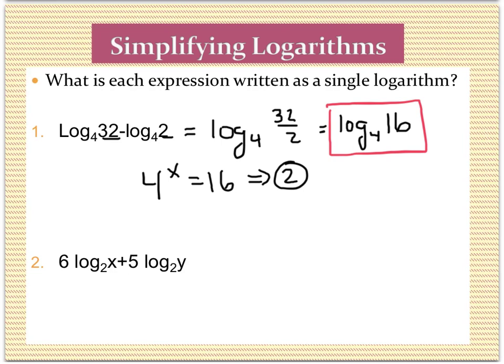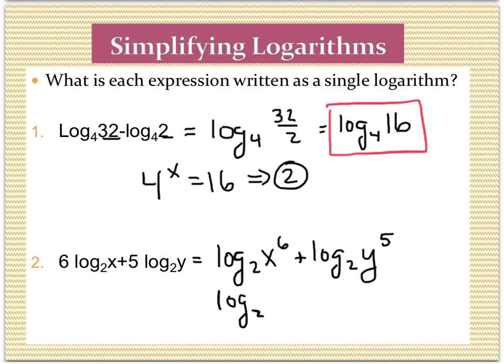This next example has a couple more things going on — we have a 6 out front and a 5 out front. Remember, a number out front can go up into the exponent position, so that's the first thing you want to do. We double-check that both bases are 2, then rewrite as log base 2 of x to the 6th power plus log base 2 of y to the 5th power. Since we have addition, we condense using multiplication, keeping the same base and multiplying the two arguments together. That's as far as we can go — that is the single logarithmic expression.